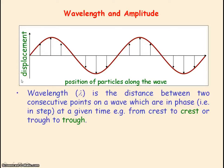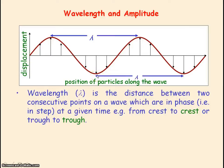Here we have again the graph of the displacement of each particle along the wave at a given time. One characteristic of a wave is its wavelength, represented by the symbol lambda. This represents the distance between two consecutive points in a wave which are in phase — the shortest distance between two points moving in step with each other. That is the distance from crest to crest, or trough to trough. The wavelength can also be determined from any point along the wave to the next identical point that is in phase with the first.